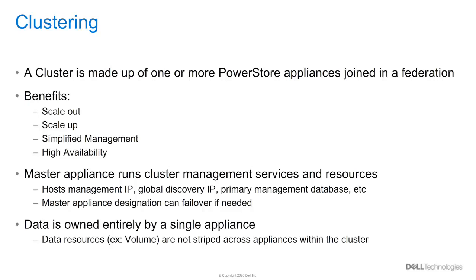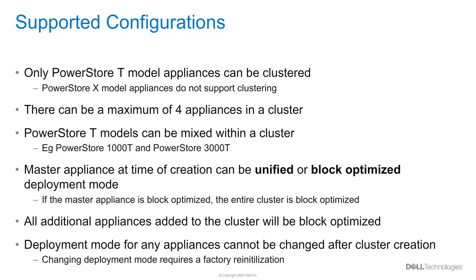Each appliance has dual nodes and many high availability features to ensure that data remains accessible. Multi-appliance clusters are only supported with PowerStore T model appliances. PowerStore X model appliances cannot be clustered — they are only single appliance clusters. For PowerStore T model appliances, there are a maximum of four appliances within a cluster. It is important to note that different PowerStore T models can be mixed within the same cluster, such as clustering a PowerStore 1000T and a PowerStore 3000T.